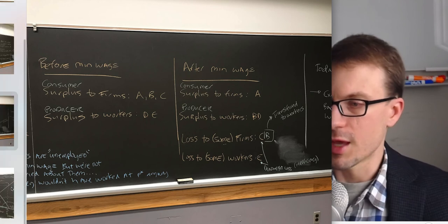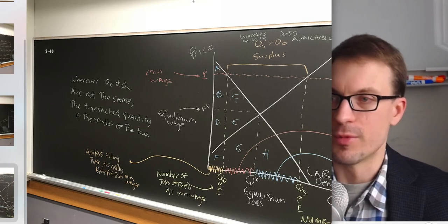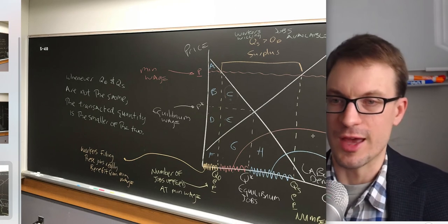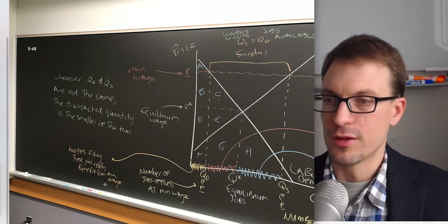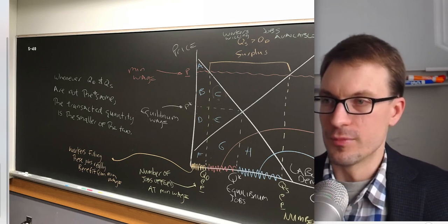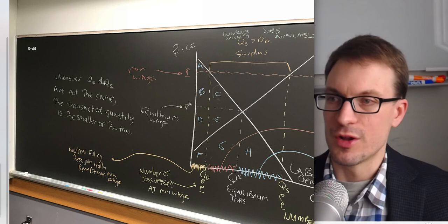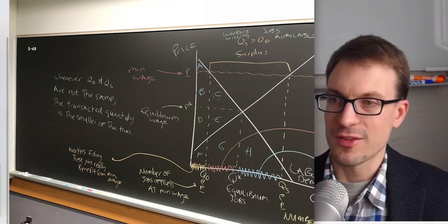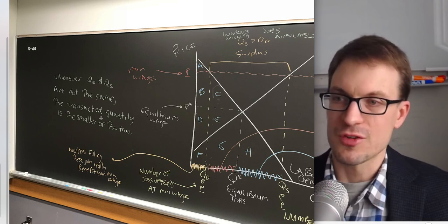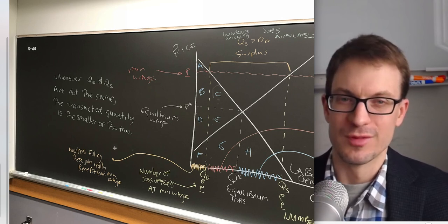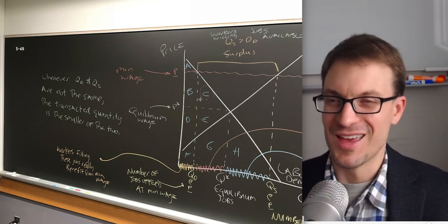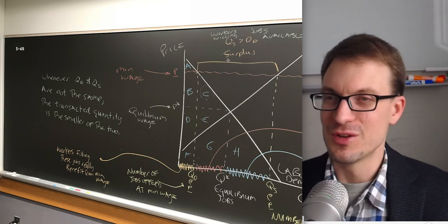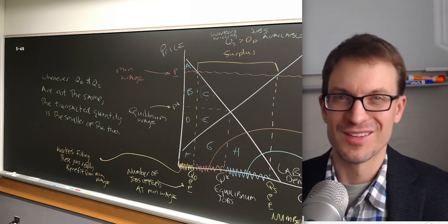One final point: whenever quantity demanded and quantity supplied are not the same, the transacted quantity — the actual amount traded — is the smaller of the two.